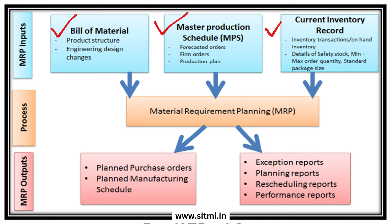In the inventory records input, MRP considers all data aspects about inventory, which includes on-hand quantity of inventory, safety stock that we have to keep for each product, and ordering policies like minimum order quantity, maximum order quantity, and also order batches or standard package size. Once all these inputs are taken by MRP, it does a scientific calculation and gives two major outputs.